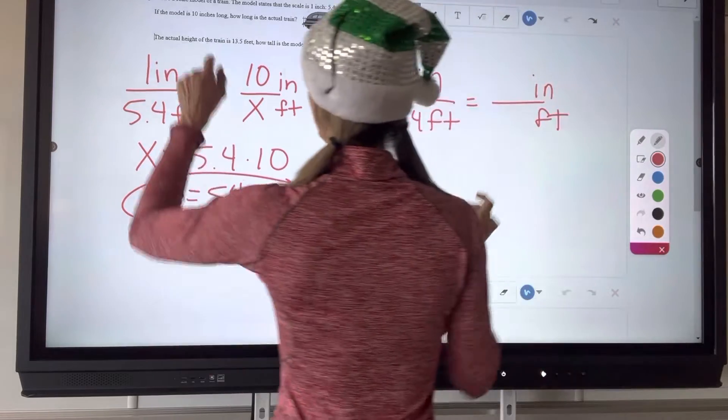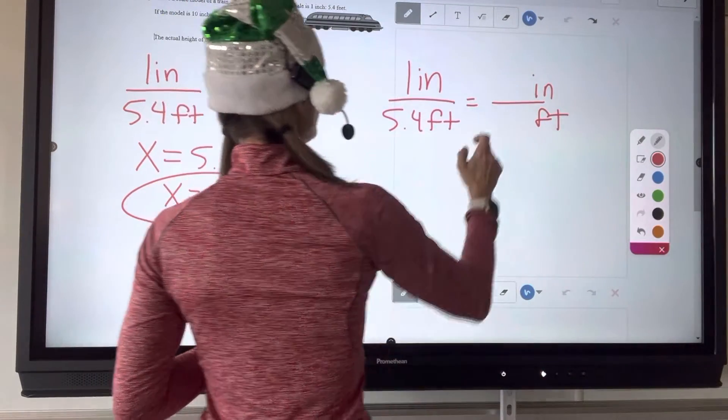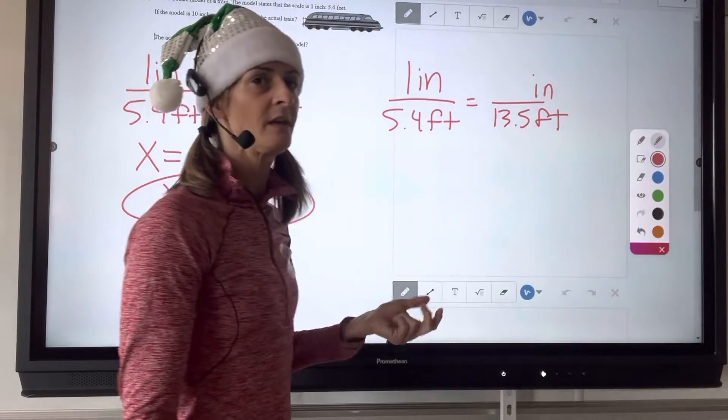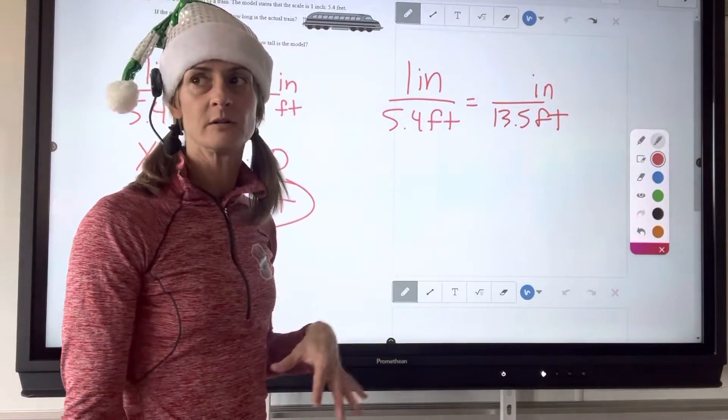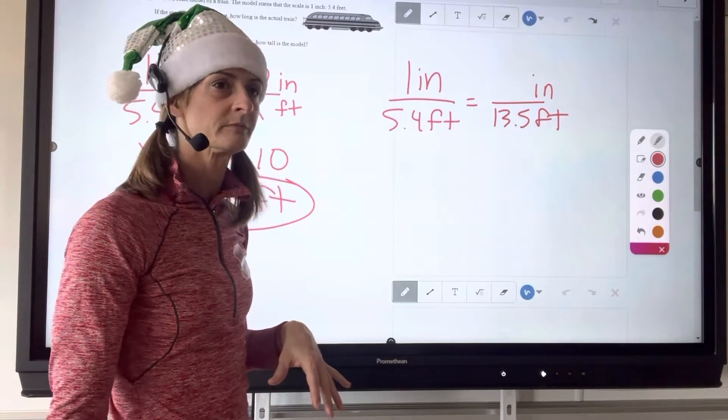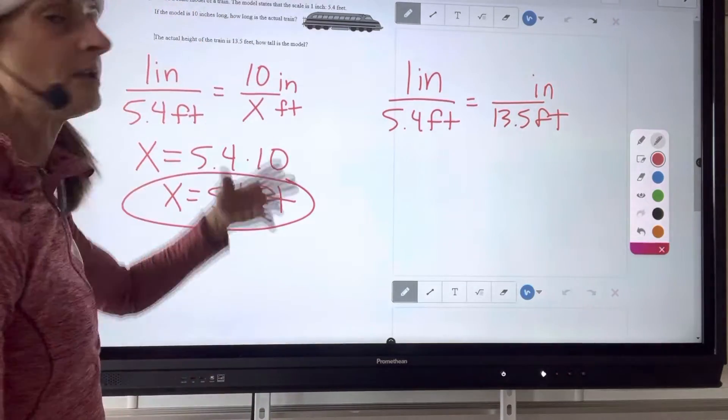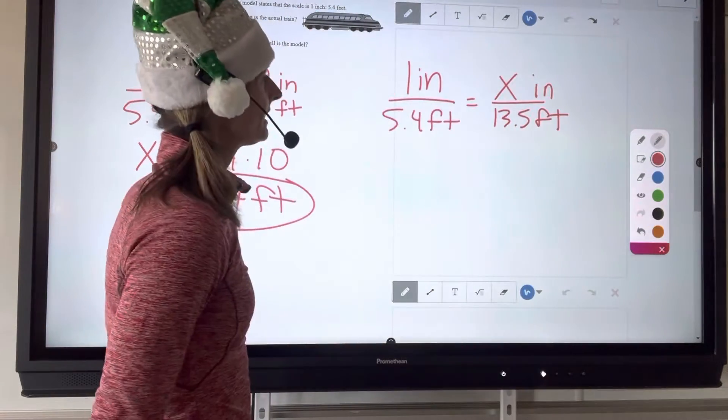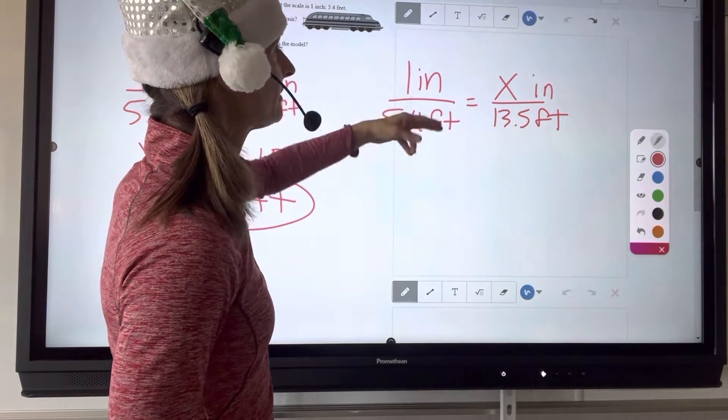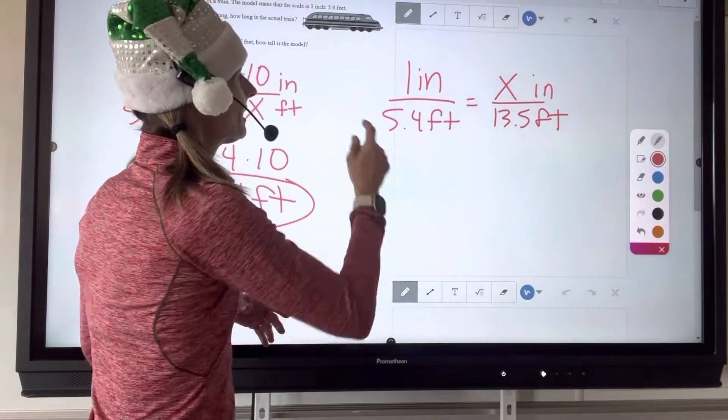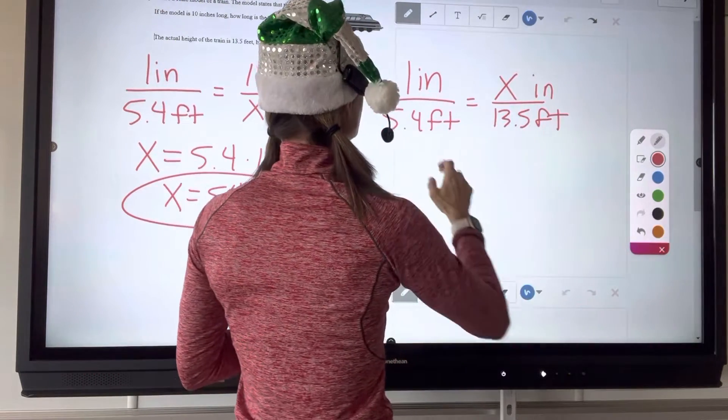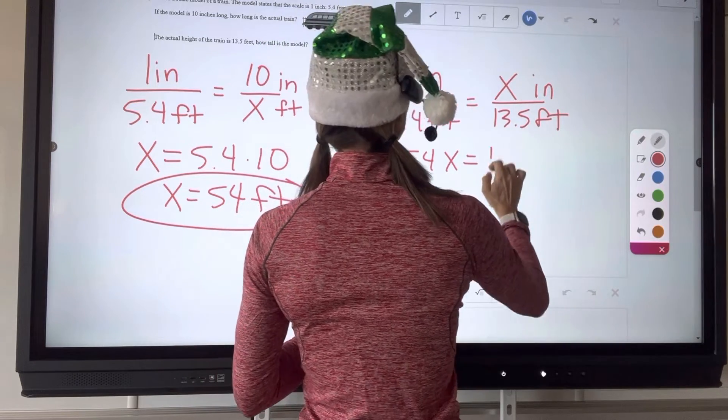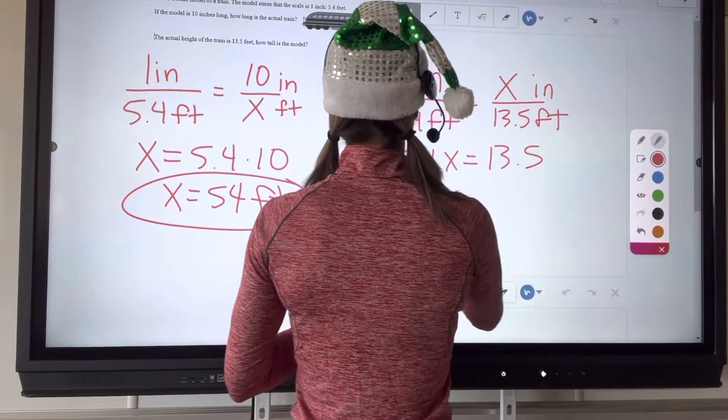Inches, feet. The actual height of the train is 13.5 feet. So 13.5 feet. Is everybody okay with putting the 13.5 in the denominator? Okay. And then how tall is the model? We'll put our X right here. And it's okay that the units are different. I'll show you that in just a second. So we're going to cross multiply. 5.4 times X equals 13.5 times 1, which is 13.5. Now, take a calculator out.